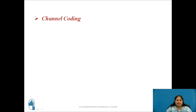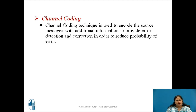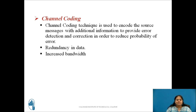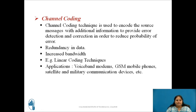Channel coding technique is used to encode the source messages with some additional information. This additional information is used to provide error detection or correction in the transmitted data at the receiver in order to reduce the probability of error during transmission. But due to this additional information along with the original message, redundancy of the data is possible, and this increases the bandwidth requirement. The known examples of channel coding technique are linear coding techniques, used in applications such as voice band modems, GSM mobile phones, satellite and military communication devices.